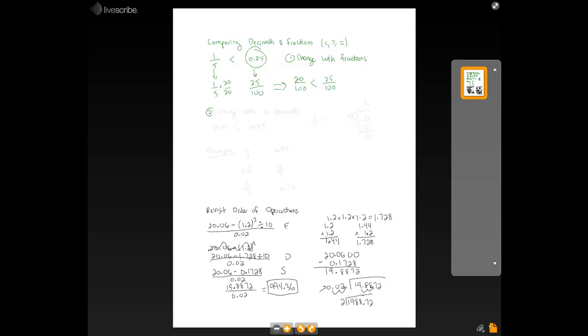Okay. The second one we can do is we can make them both decimals. So, change both to decimals. Okay. So, I already have the first, the one on the right is a decimal. That's 0.25. How do I change 1 fifth to a decimal?